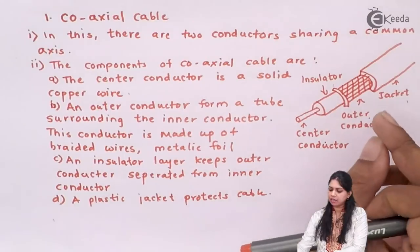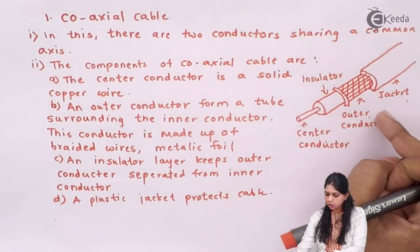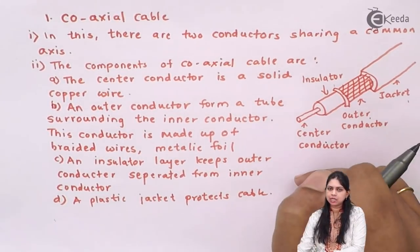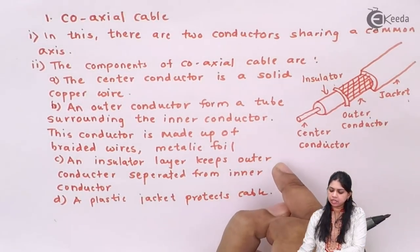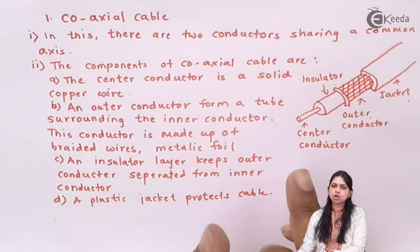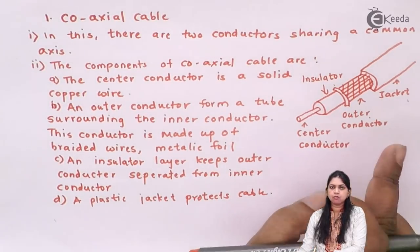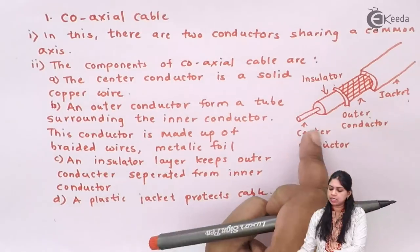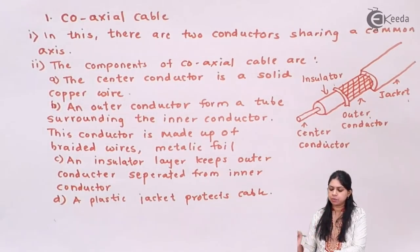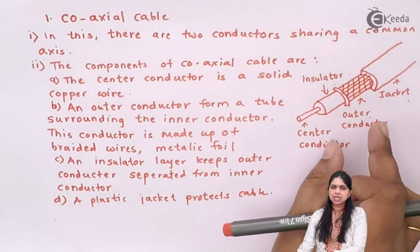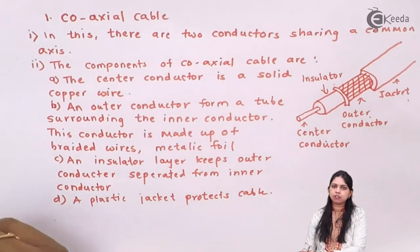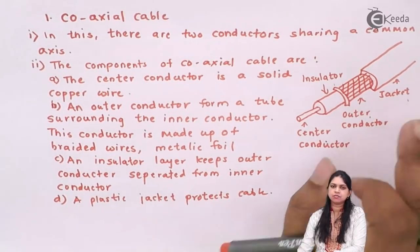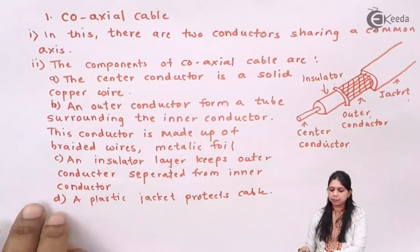So this is the structure of coaxial cable. It has two conductors — a center conductor and an outer conductor — both sharing a common axis. The center conductor is made of solid copper wire, the outer conductor forms a tube of metallic foil surrounding it, the insulator keeps the two conductors separated, and the jacket protects the wire from damage.